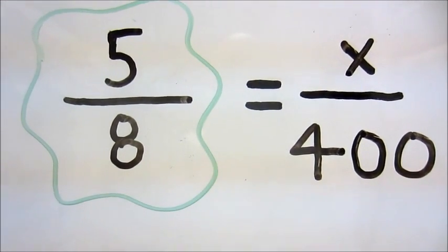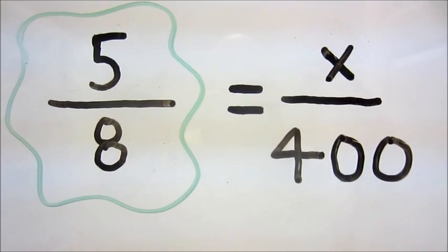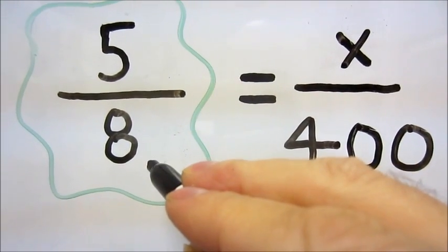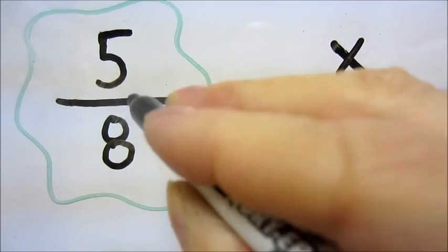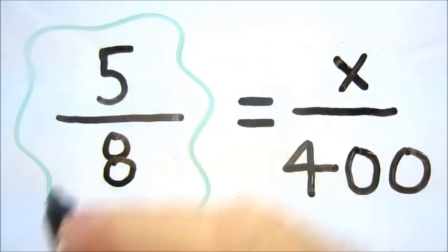So our new equation becomes 5 eighths equals x over 400. So what we do now is take our 400, divide it by 8 to get 50, take that 50, multiply it by 5 to get 250, and we go to our next step.